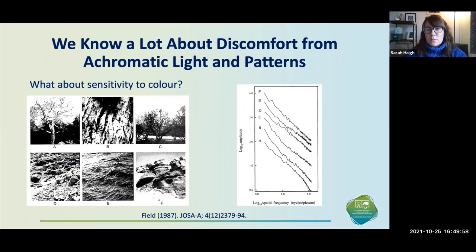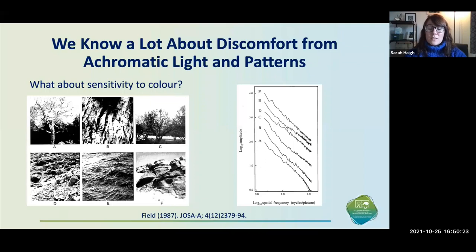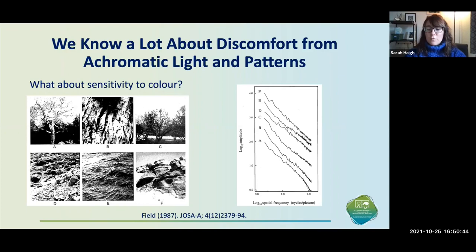We know a fair amount about the different parameters of visual stimuli that can evoke visual discomfort, particularly in the luminance domain. There are certain spatial characteristics common in natural environments, and when these parameters are violated, stimuli tend to be more uncomfortable. For example, there is a one-over-f relationship between spatial frequency and contrast, and when this slope is too steep or too shallow, or if there is excess contrast at mid-range spatial frequencies as commonly seen in striped patterns like blocks of text, these images tend to be more uncomfortable to look at. But what happens in the colour domain? Can we find a parameter of colour that can help us predict visual discomfort?